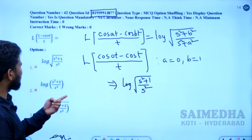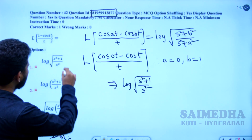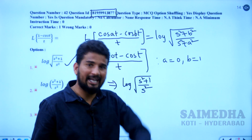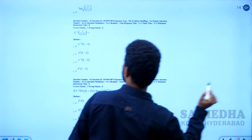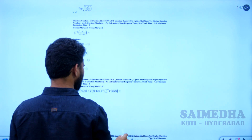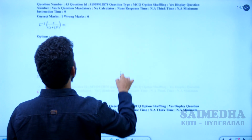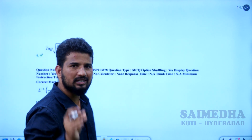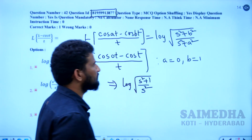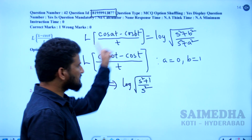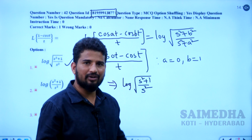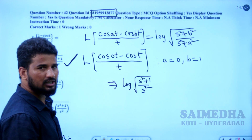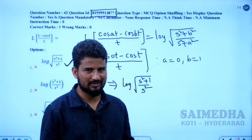We have the correct option as log[√(s² + 1) / s²], which is the first option. But the given answer key marked the fourth option as correct — the fourth option is not the correct option. That means the given answer is wrong. You need to provide sufficient explanation to state your objection. The first option was the correct option for the given question. Please note this and move on to the next two questions.